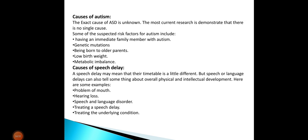If you have a family member with autism, it may increase the risk of autism. Other risk factors include low birth weight, metabolic imbalance, and having older parents, which may also contribute to autism.